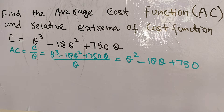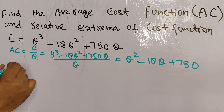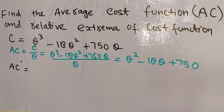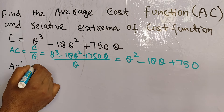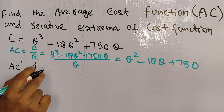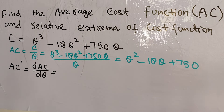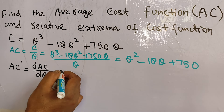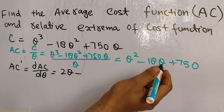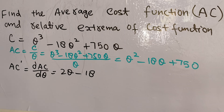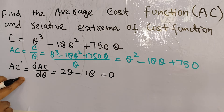Now we need to find the first derivative, AC prime — that is the derivative of the average cost function with respect to output. The derivative of Q squared is 2Q, minus the derivative of 18Q which is 18. So the first derivative is 2Q minus 18. We set it equal to 0 to find the relative extrema.